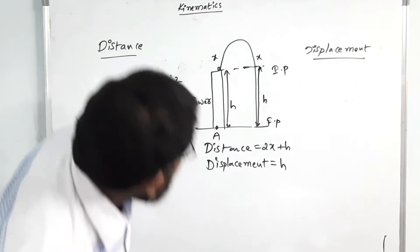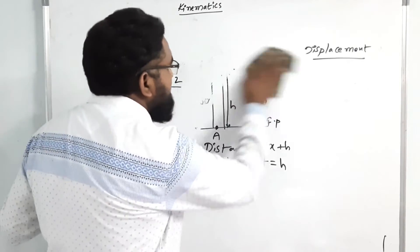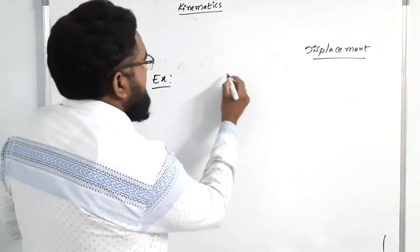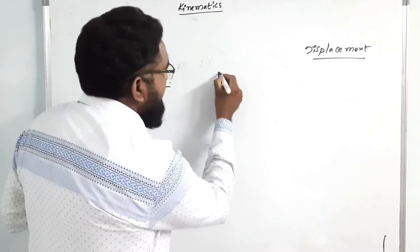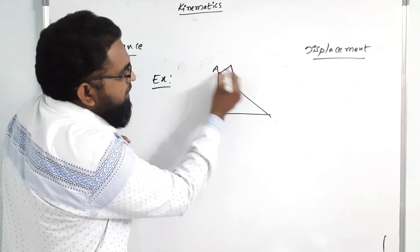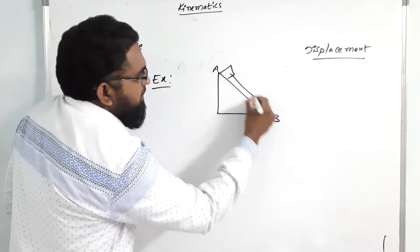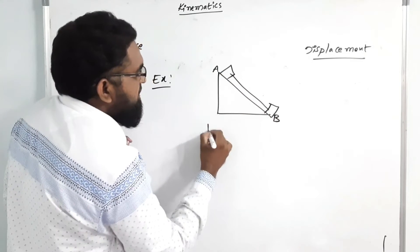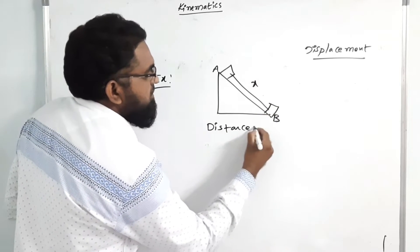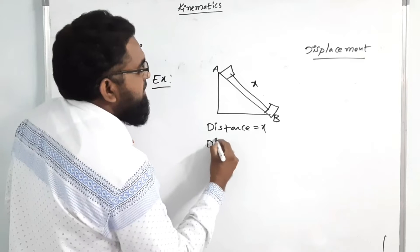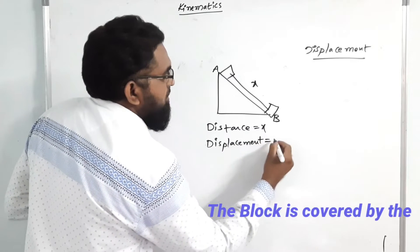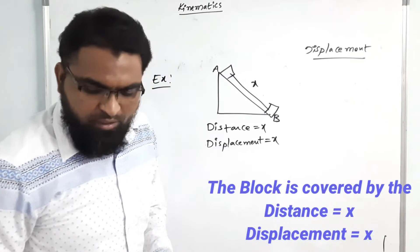Example 3: suppose there is one inclined plane and a block is moving from A to B. This distance is x. So distance equals x and displacement also equals x. Both are the same.